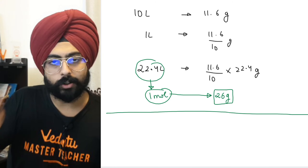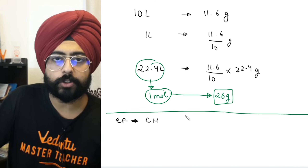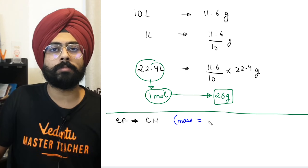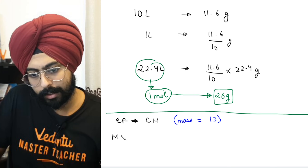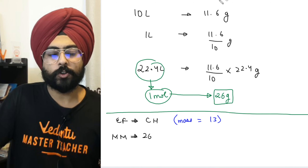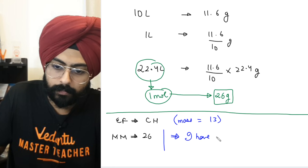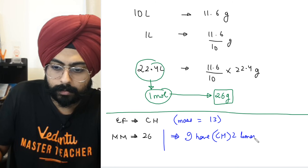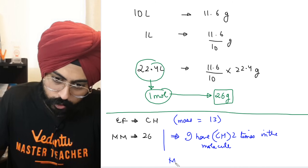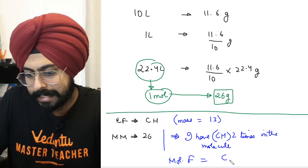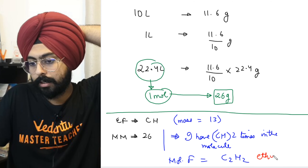My empirical formula is CH, with mass = 13. My molecular mass is 26. So CH is present twice in one molecule — I have the empirical formula two times. Therefore the molecular formula is C2H2, which is ethyne gas.